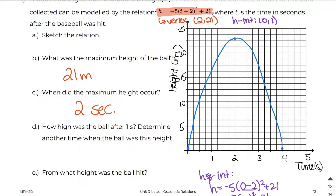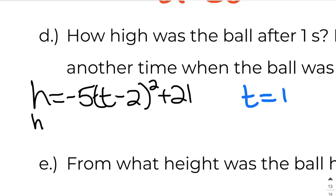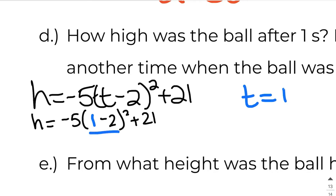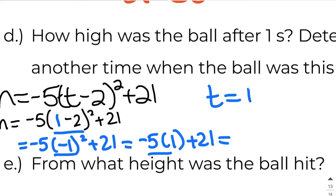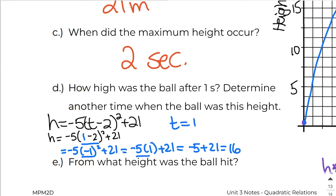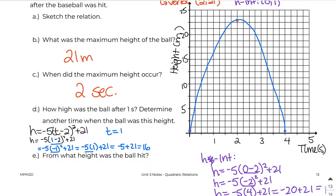How high was the ball after 1 second? We need to plug t equals 1 into our equation. So h equals negative 5 times (1 minus 2) squared plus 21. 1 minus 2 is negative 1, negative 1 squared is positive 1, negative 5 times 1 is negative 5, plus 21 gives us 16. So at 1 second, the height will be 16 meters.